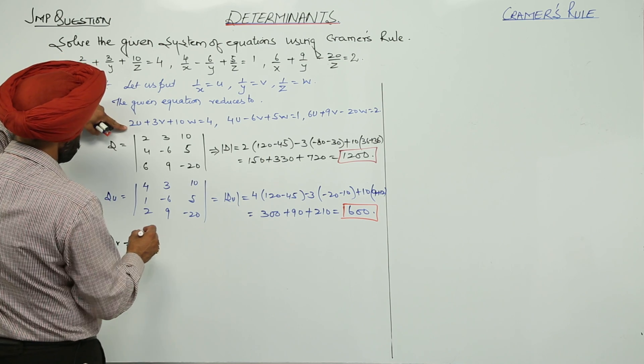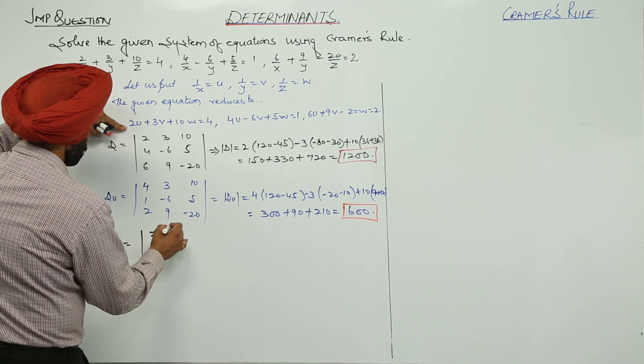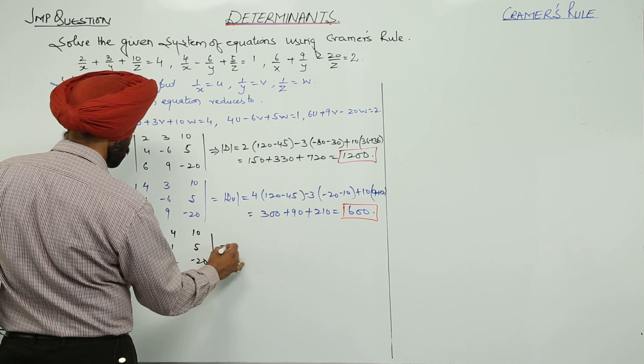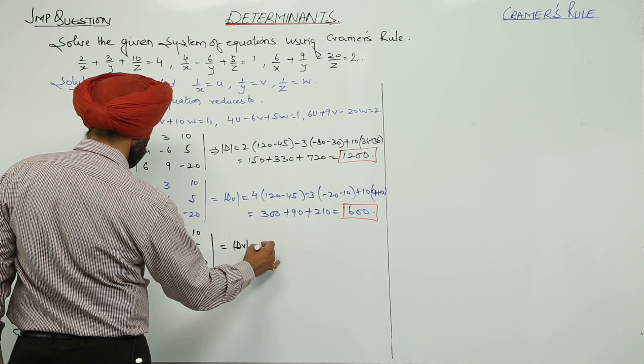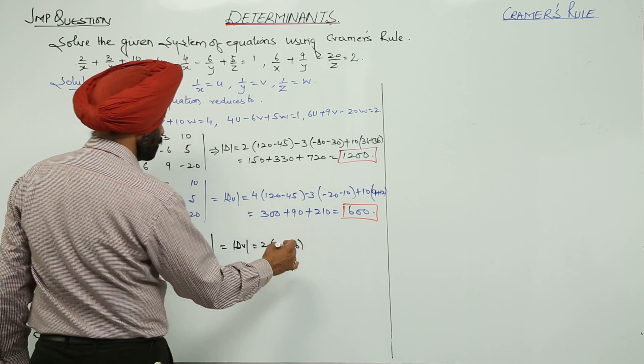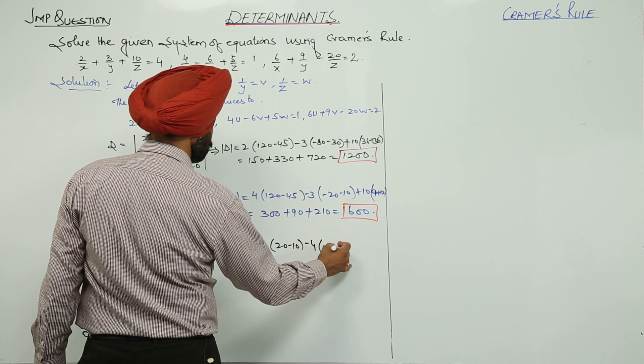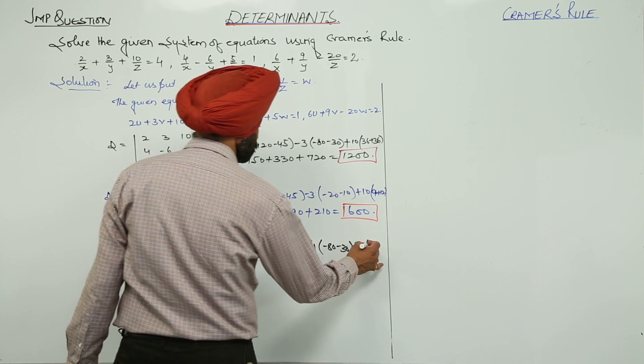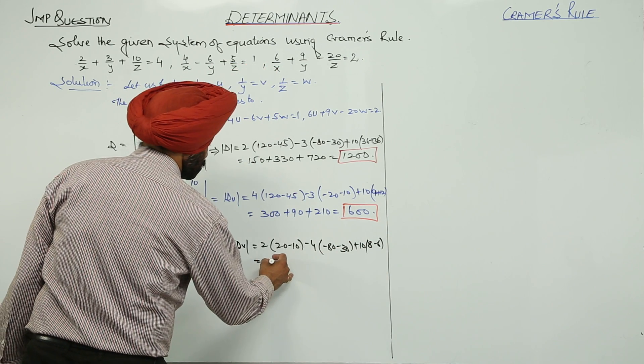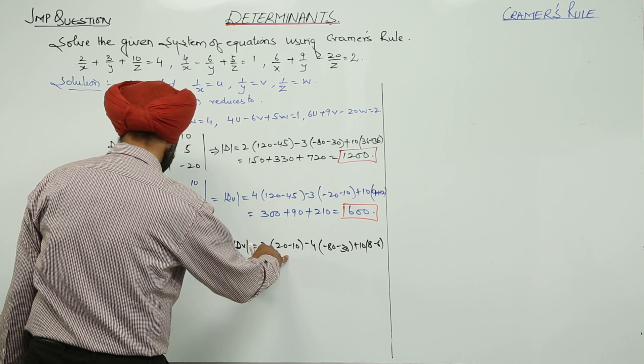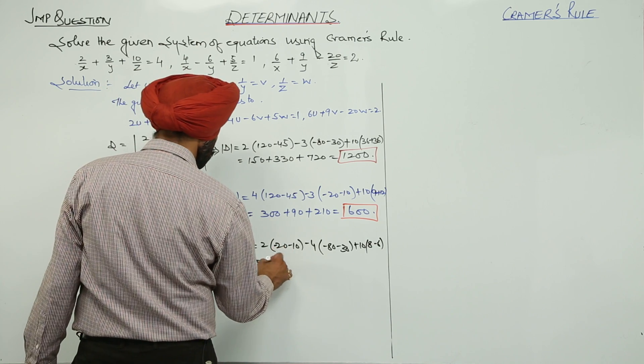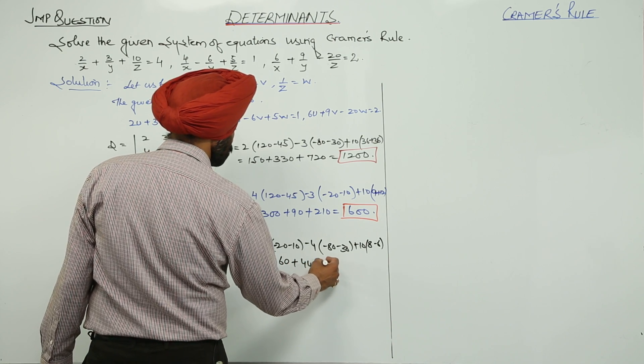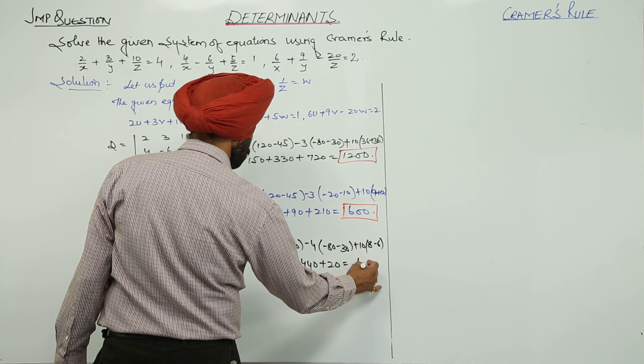Dv: first row as it is 2, 4, 6. We are changing the second one now. 4, 1, 2 and 10, 5, negative of 20. 2 with 20 minus 10, minus 4 with minus 80, minus 30, plus 10 with, plus 10 with 8, minus 6. This becomes 20, negative of 20. So this becomes negative of 60, then positive of 440 plus 20, 400.